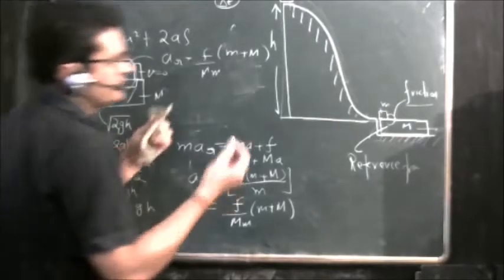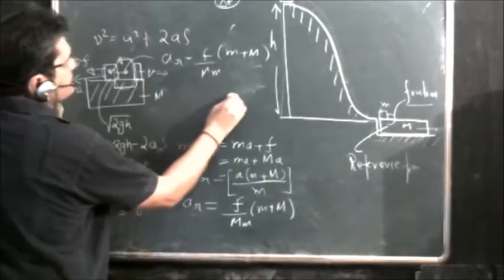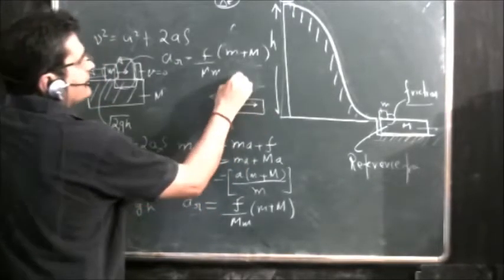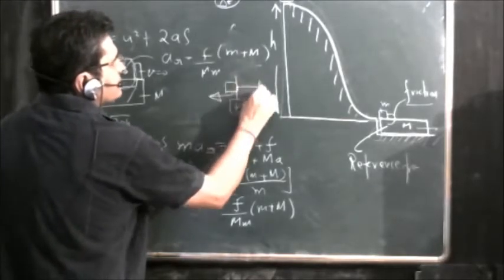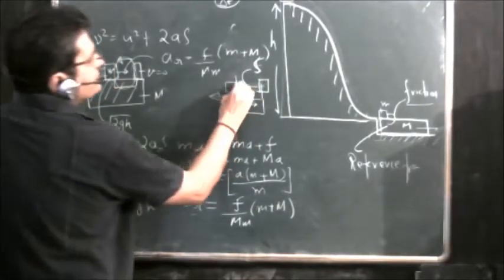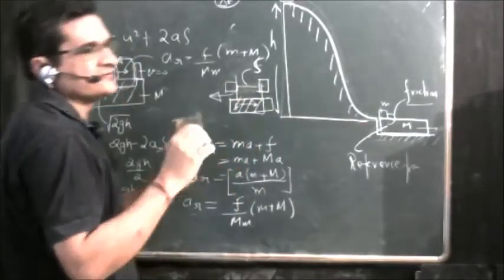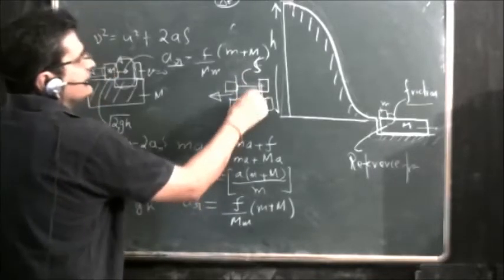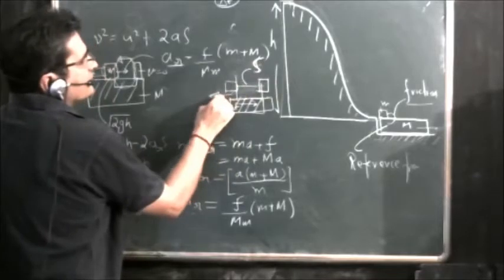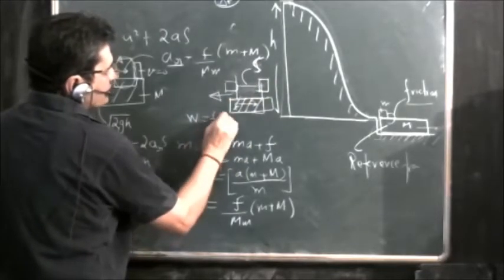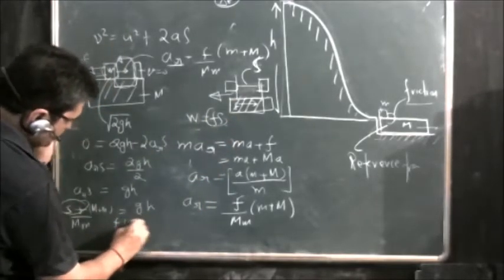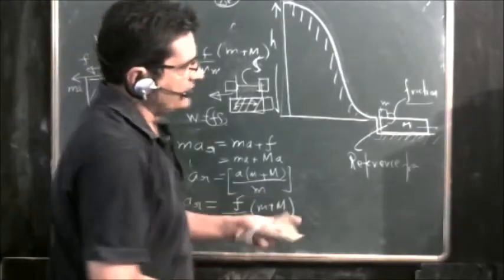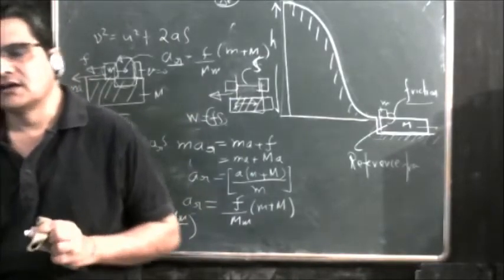The work done by the frictional force is F × s, since the same force acts on the body over the relative distance s traveled in this frame of reference. We found F × s = Mmgh/(M + m), which is the same answer as obtained earlier. So the reference frame doesn't make any difference to this problem. Thank you.